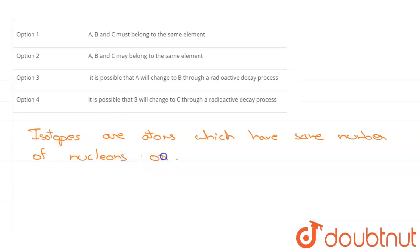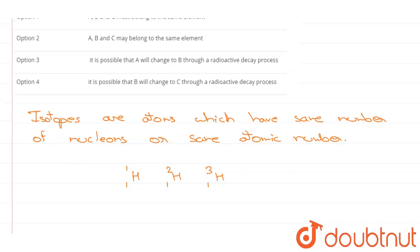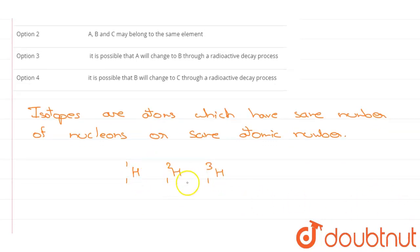Or you can say, they have same atomic number. For example, Hydrogen, Deuterium and Tritium are isotopes of hydrogen.